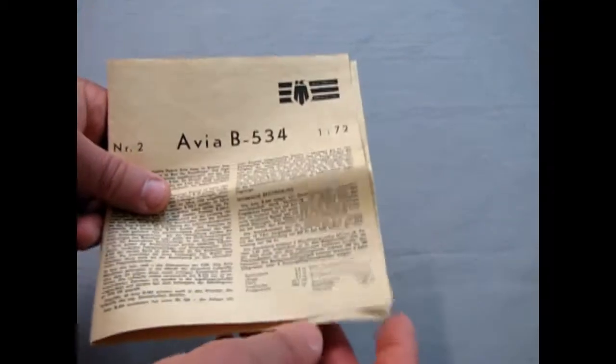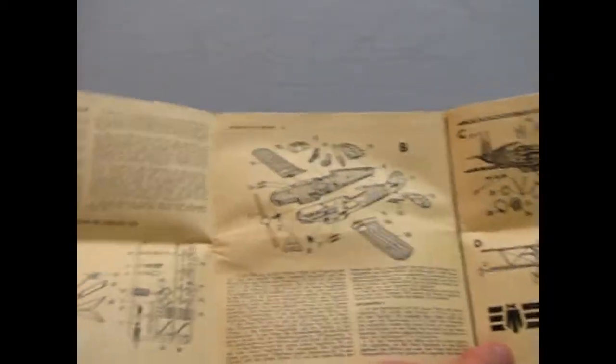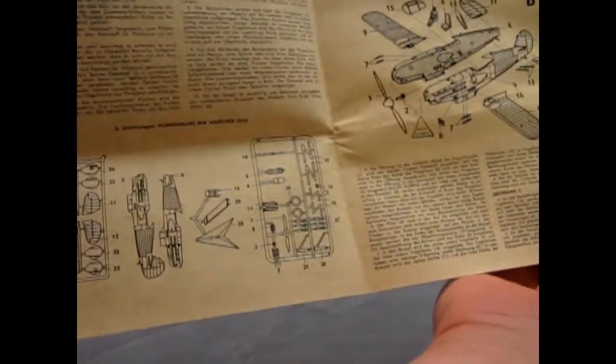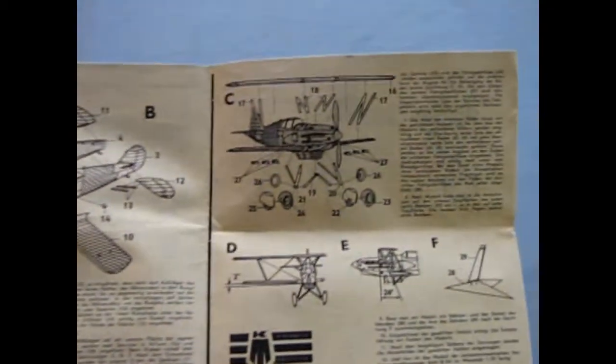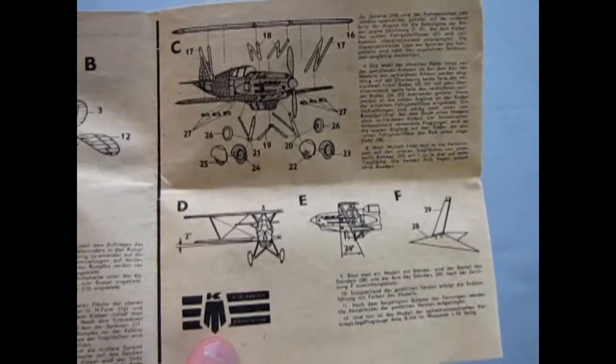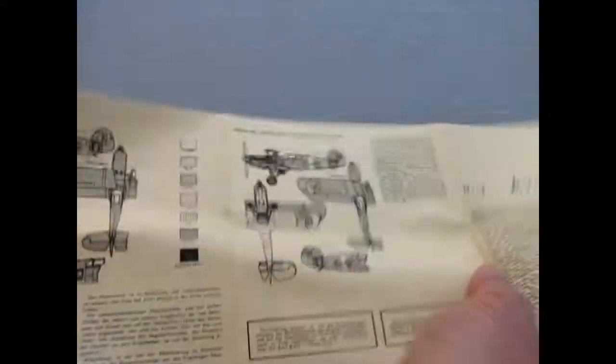And then I also have this, which seems to be the actual instructions. Showing you how it all goes together. There's the parts trees. There's the bits. And there's the final steps. You can also display it on a clear stand, it looks like. And then there's two of the paint schemes.